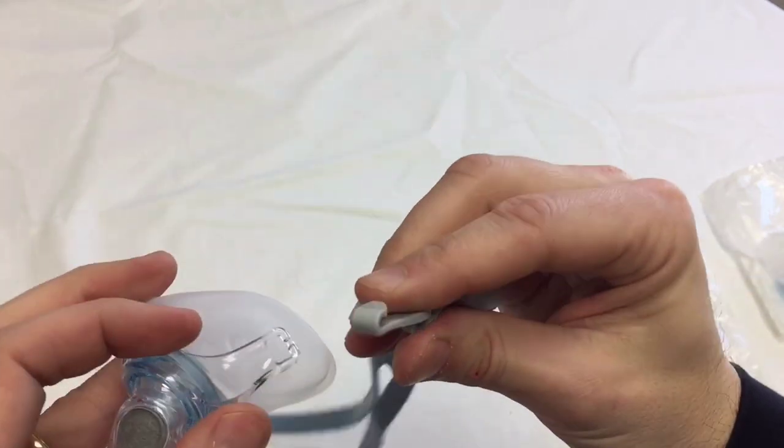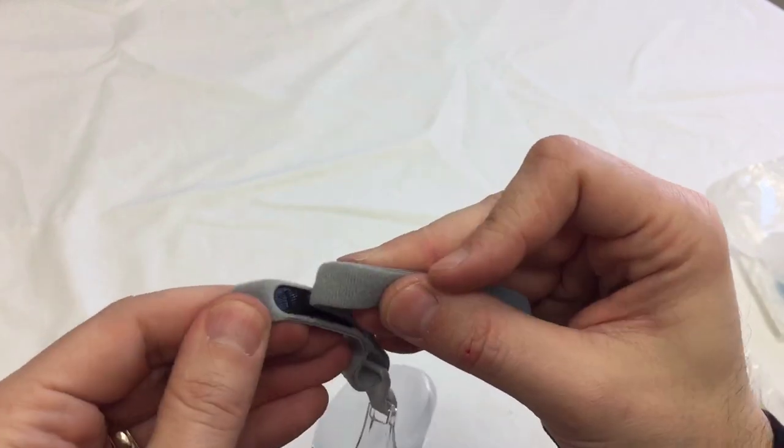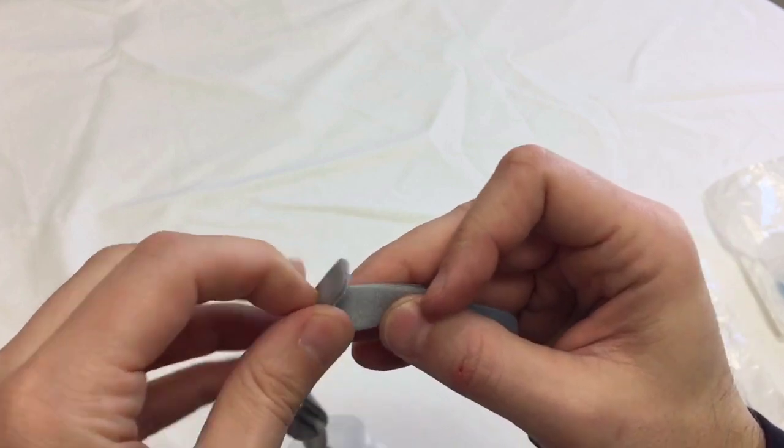Here we have the headgear clips, easy to get on and off. So once you have the Velcro set on the headgear where you'd like it, you can just take the mask on and off with the headgear clips.